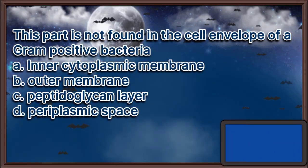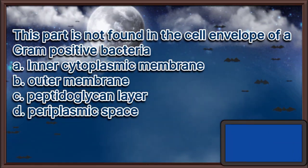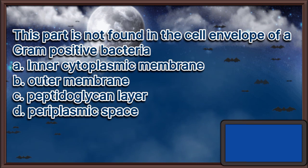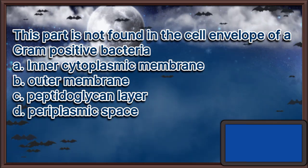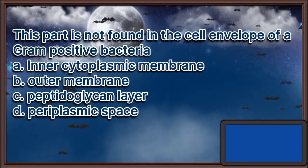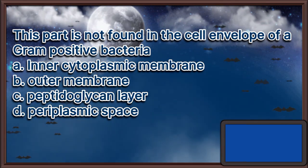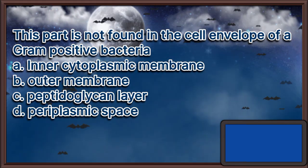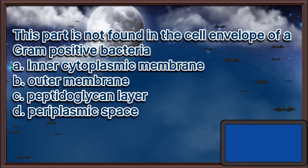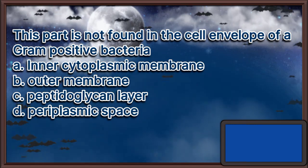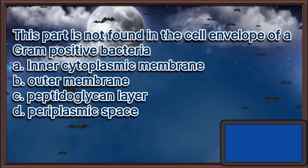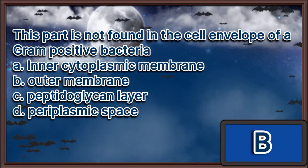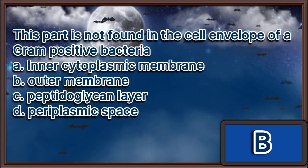This part is not found in the cell envelope of a gram-positive bacteria. A. Inner cytoplasmic membrane. B. Outer membrane. C. Peptidoglycan layer. D. Periplasmic space. The answer is letter B.